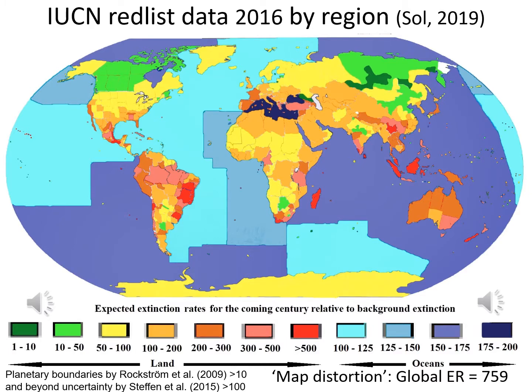This presentation builds on work I published in 2019, where I used IOC and Red List data to explore regional variation in expected extinction rates. I expressed the regional variation relative to background extinction, taking the upper bound estimate of one extinction per million species years from Rockström et al. The planetary boundary, as expressed by the same authors, is set at 10, and later Stefan et al. added a zone of uncertainty up to 100. Slightly over half of global landmass and all of the oceans currently face expected extinction rates that exceed the planetary boundary beyond uncertainty. The map illustrates that one finds the highest expected extinction rates in tropical regions and on islands.